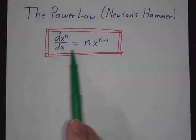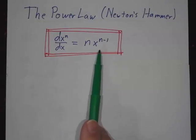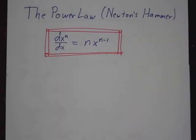And it's simple. The derivative of x to the n is nx to the n minus 1. This is called the power law. And it's also sometimes called Newton's hammer. Newton used it a lot.